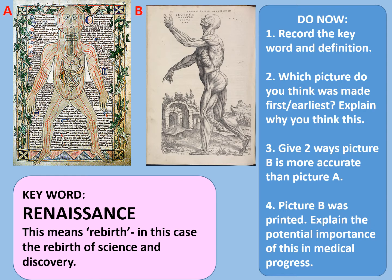Hopefully we've recorded the key word. The picture which was made earliest is picture A. Two ways that picture B might be more accurate: firstly, the muscles are drawn and the pose is far more realistic, appearing to have been drawn with much more skill. Not only that, each muscle has been labelled, suggesting a deep understanding of the human body — in other words, anatomical knowledge. The significance of picture B being printed is that this image could be reproduced thousands of times, meaning this accurate representation of the human body could be shared far and wide, and lots of people could learn from it, making further progress more likely.